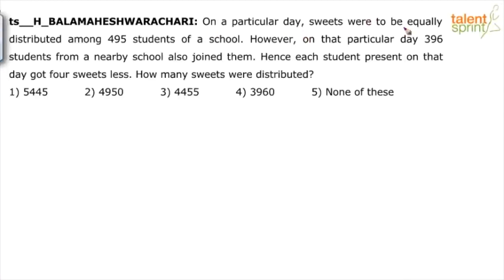On a particular day, suites were to be equally distributed among 495 students of a school. However, on that particular day, 396 students from a nearby school also joined them. Hence, each student present on that day got 4 suites less.